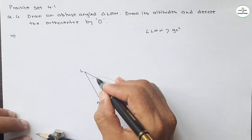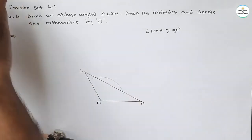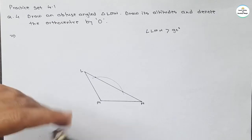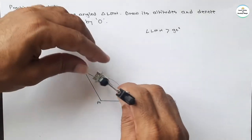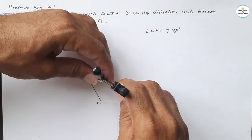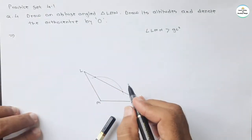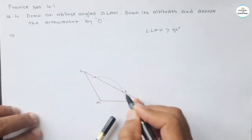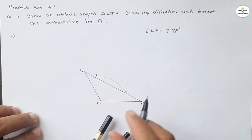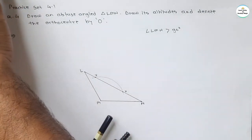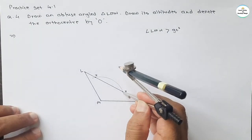Now again take the compass and take more than half of this segment. Let these two intersecting points be named X and Y. Take more than half of segment XY in the compass.